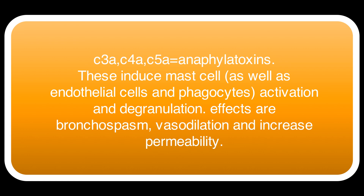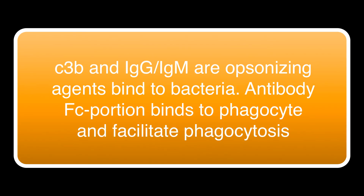Another thing to note is C3B, which has another function: besides being part of the complement system, it can work as an opsonin — a marker. As shown in the picture, you will have a bacteria, and C3B or another opsonin such as IgG or IgM can bind to the bacteria. This facilitates other immune cells such as macrophages or neutrophils to come, bind to the Fc portion of the antibody, and get activated, enhancing phagocytosis and destruction of the bacteria intracellularly within the white blood cell.